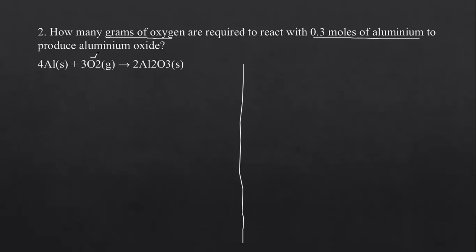Ensure the equation is balanced. We have four aluminium on the left, and 2 times 2 = 4 on the right. We have 3 times 2 = 6 oxygens on the left, and 2 times 3 = 6 on the right. This equation is already balanced. We say number of moles of aluminium over 4 equals number of moles of O2 over 3.